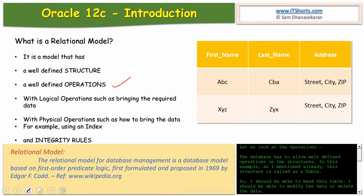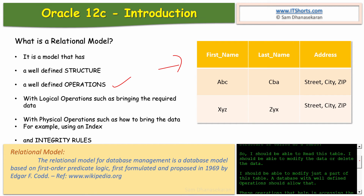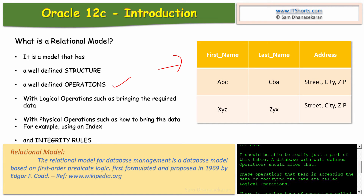Let us look at the operations. The database has to allow well-defined operations on the structures. In this example, this structure is called a table, so I should be able to read this table, modify the data, or delete the data. I should be able to modify just a part of this table. A database with well-defined operations should allow that. These operations that help in accessing or modifying the data are called logical operations.